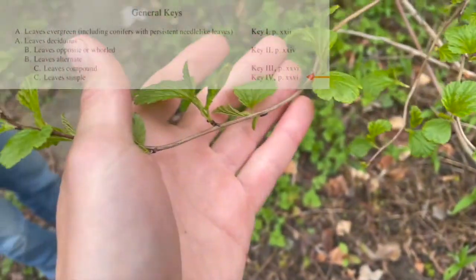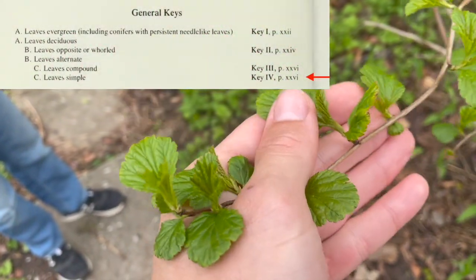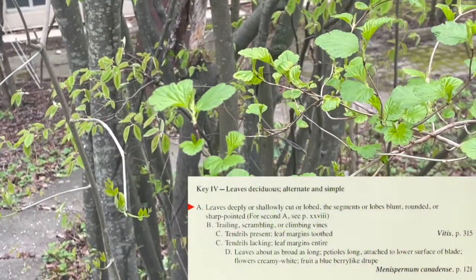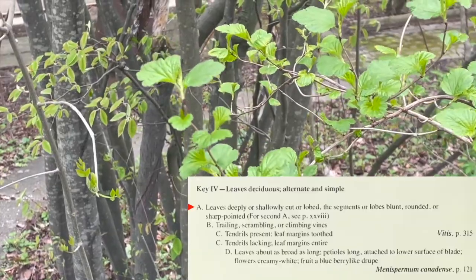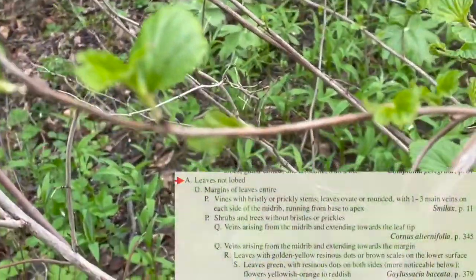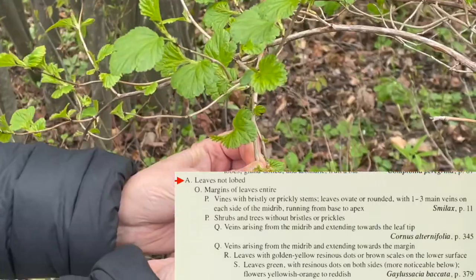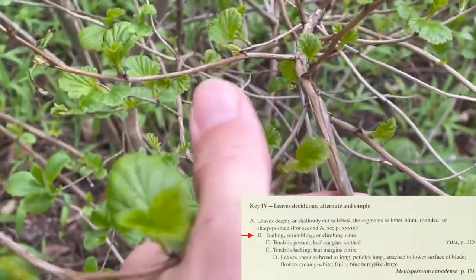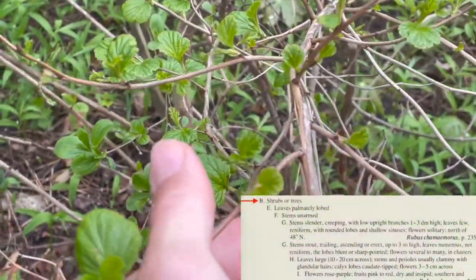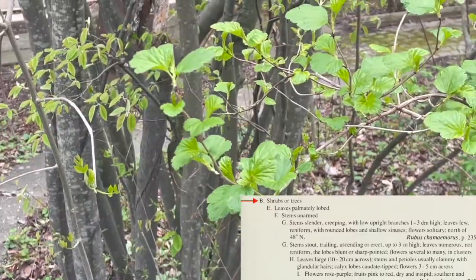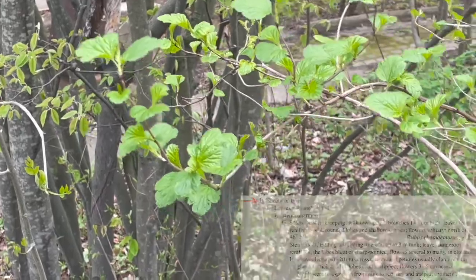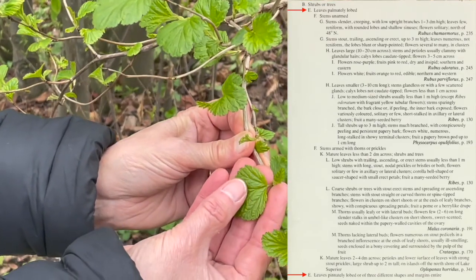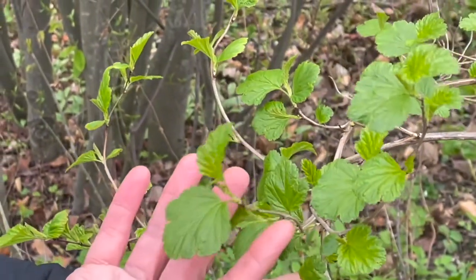Here's a different shrub that we will try to identify. Starting again at the general keys, you will notice that this shrub has simple alternate deciduous leaves, which will bring us to key 4. The first option A: leaves deeply or shallowly cut or lobed, the segments or lobes blunt, rounded, or sharp pointed. Or A: leaves not lobed. You can see that these leaves are lobed. Our next option B: trailing, scrambling, or climbing vines, or B: shrubs or trees. You can see that this is a shrub or tree and is not a trailing, scrambling, or climbing vine. Our next option E: leaves palmately lobed, or E: leaves pinnately lobed or of three different shapes and margins entire. You can see that these leaves are palmately lobed.